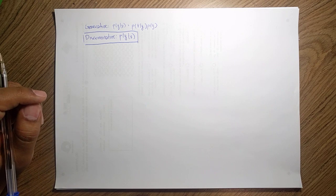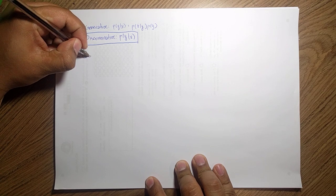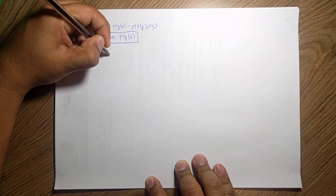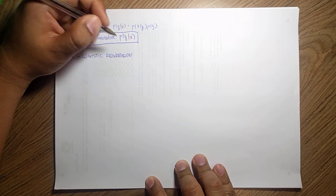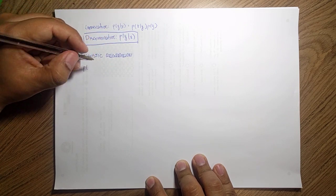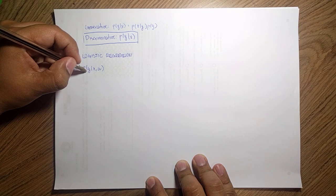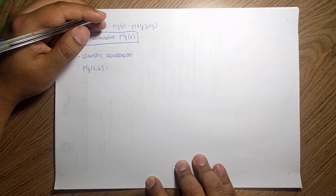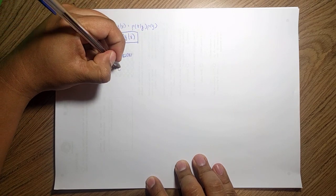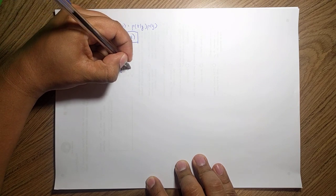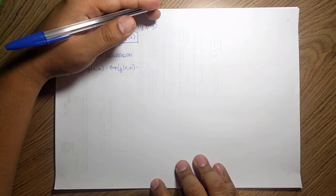Our main focus will be on logistic regression, one of the most useful methods. We already discussed how we can approximate the class given the data using different parameters. This is a Bernoulli distribution — the distribution of y given x and w — defined based on a sigmoid, which is why it is called logistic.